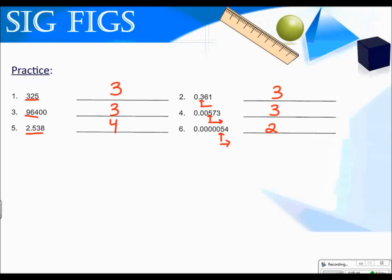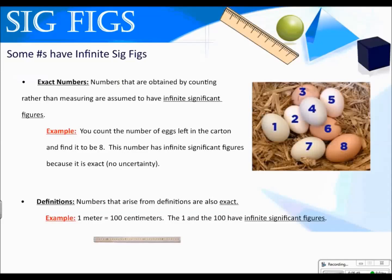Some numbers will have infinite sig figs. Exact numbers — meaning numbers obtained by counting rather than measuring — are assumed to have infinite significant figures. For example, you count the number of eggs left in the carton and find it to be eight. This number has infinite significant figures because it's exact; there's no uncertainty. There are obviously eight eggs — not eight and a half, exactly eight. Definitions — numbers that arise from definitions — are also exact with an infinite number of sig figs. For example, our metric conversions, like one meter equals 100 centimeters: the one and the hundred have infinite significant figures.